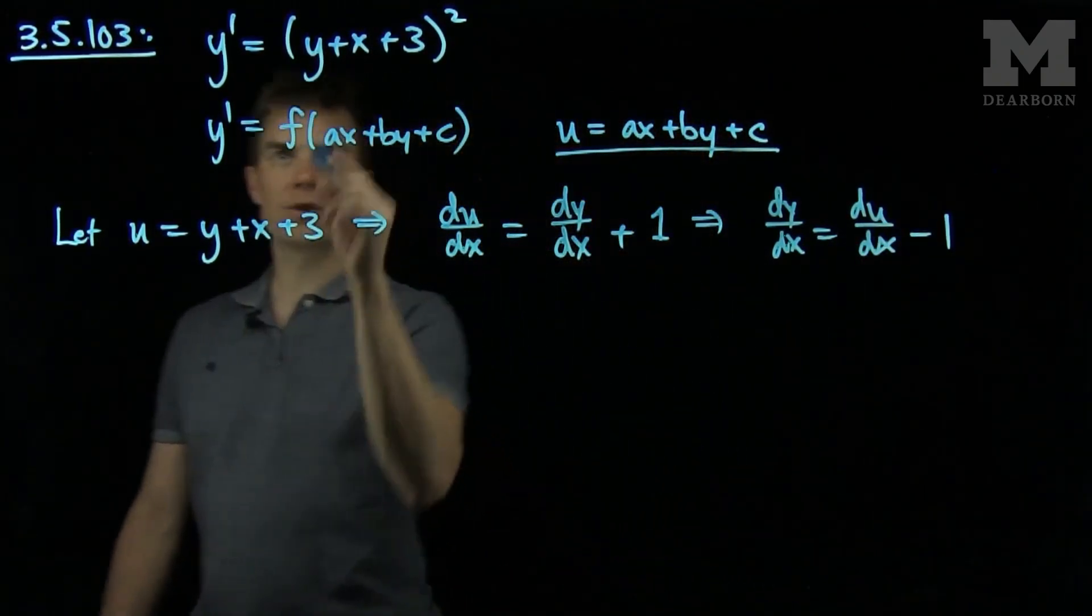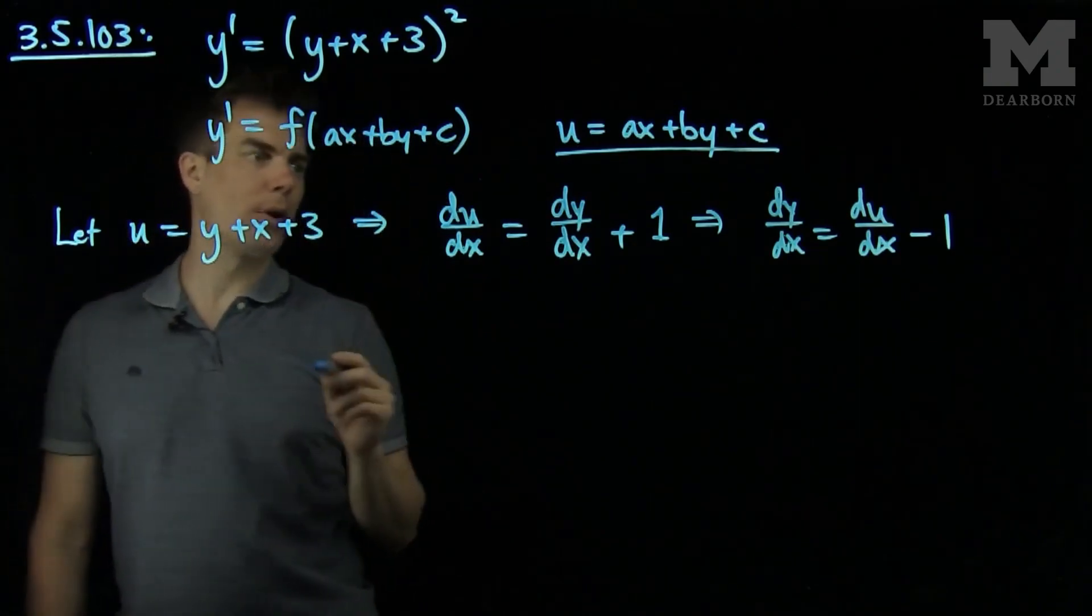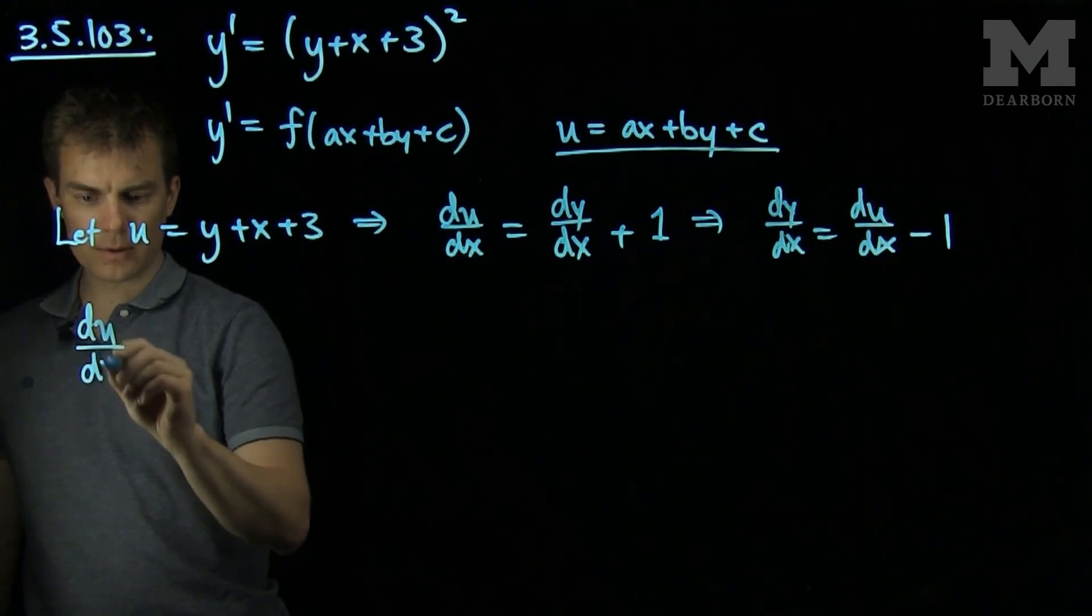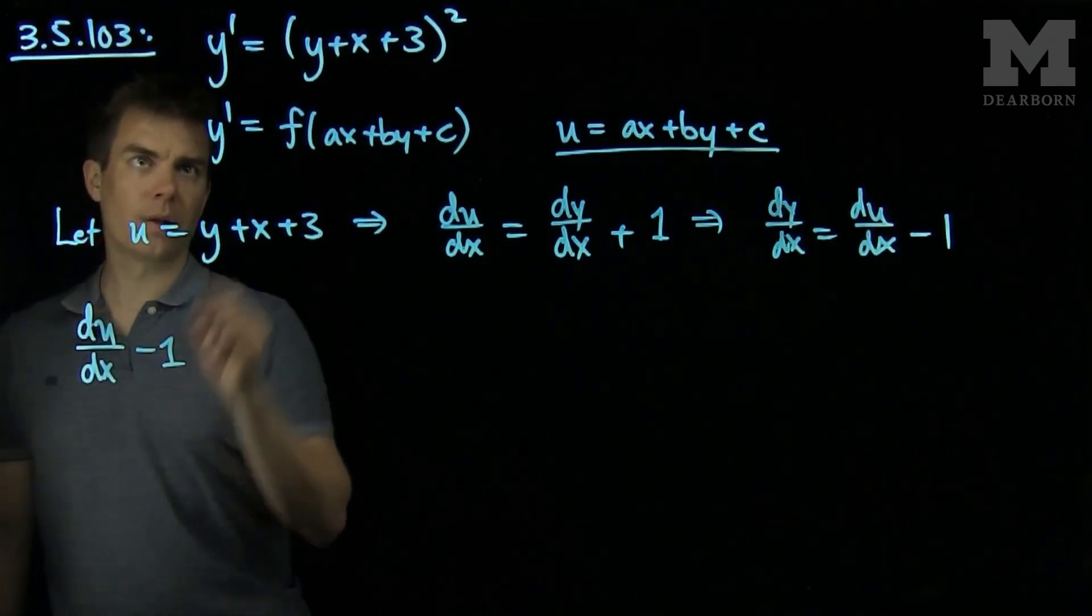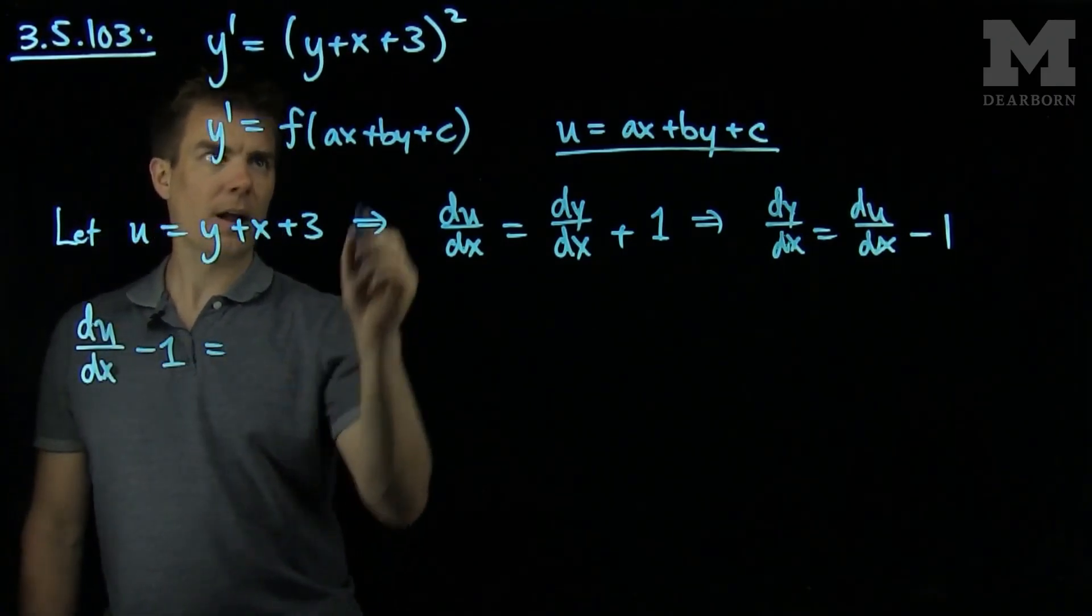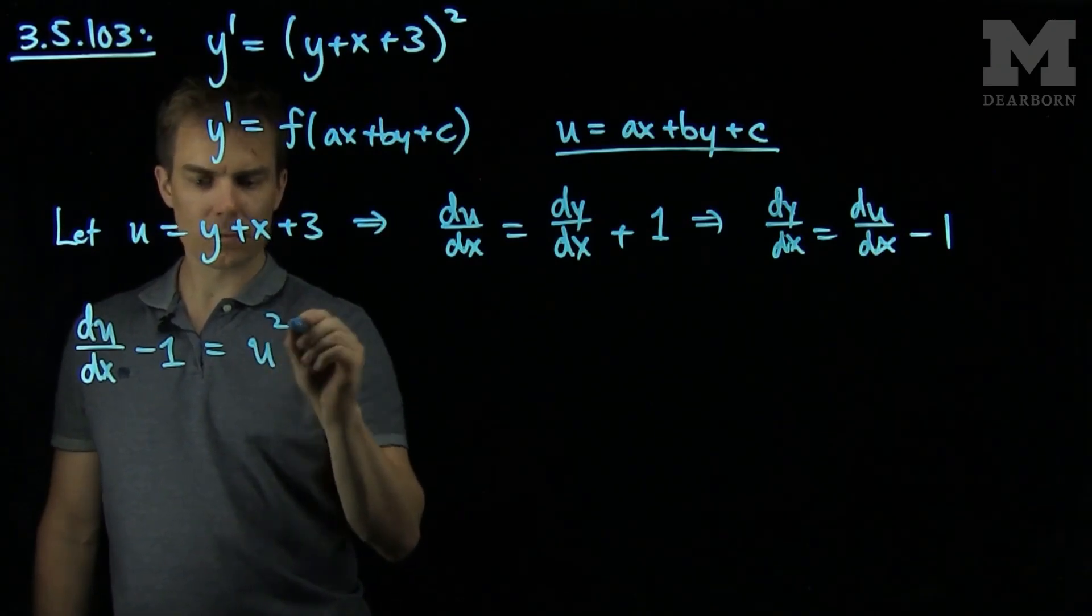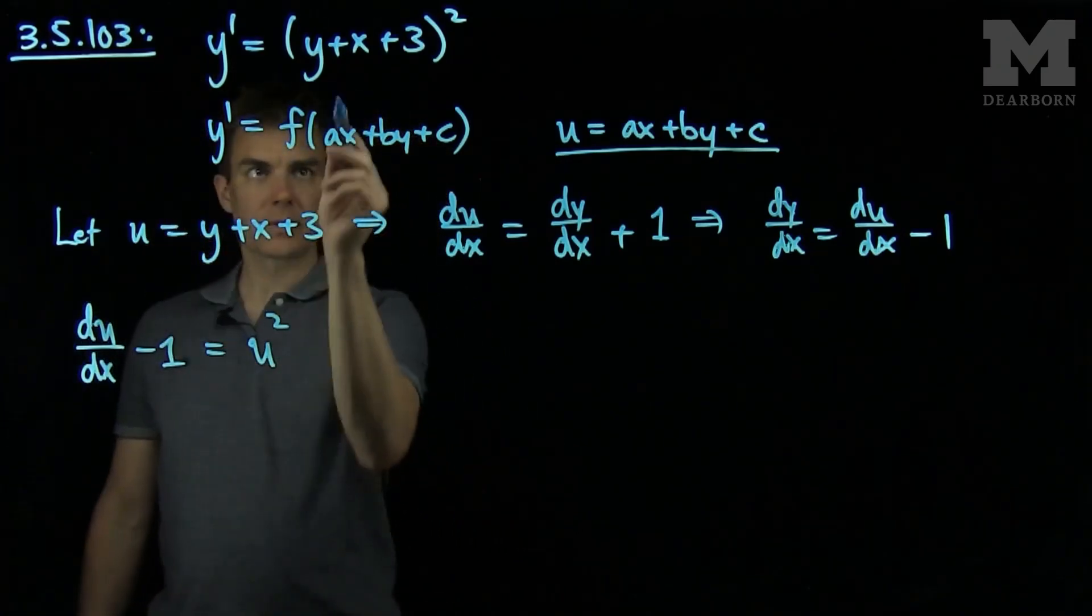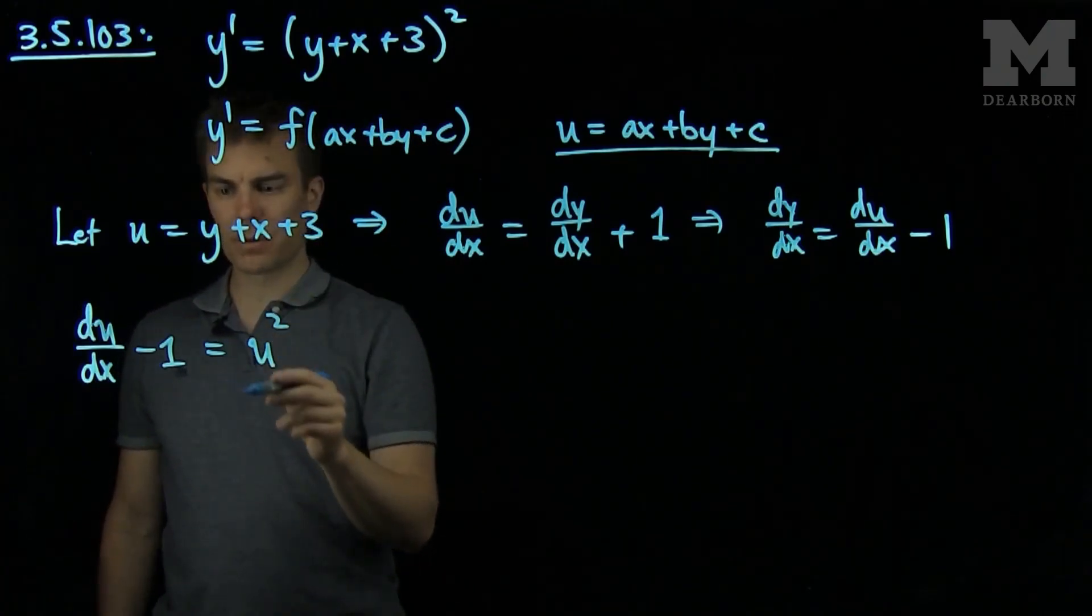Now with this substitution, we can change our differential equation. So I have a y' on the left-hand side. The y' will turn into du/dx minus 1. That's my y', and then I'll have u squared. And so what I've done now is I've taken this complex differential equation and I've simplified it.